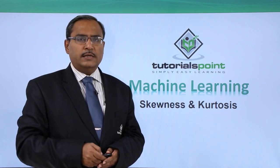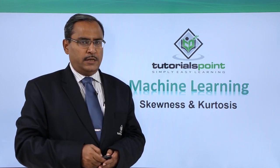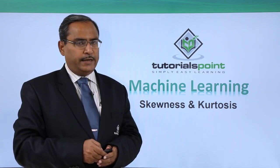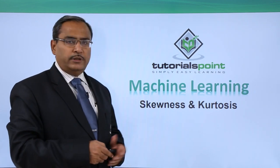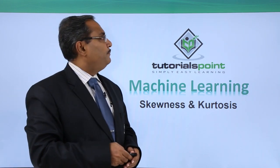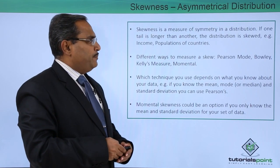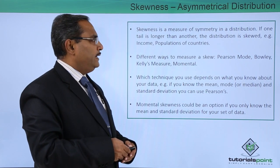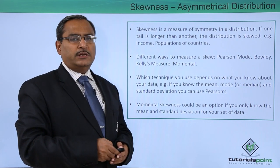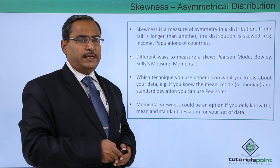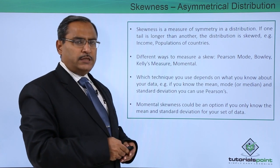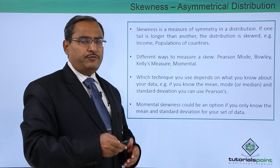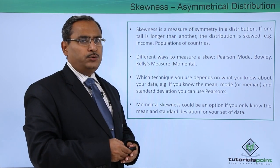In this video, we are going to discuss skewness and kurtosis. Skewness will depict the symmetry in a distribution. Skewness is a measure of symmetry in a distribution — if one tail is longer than the other, then we say that the distribution is skewed. If you consider the income or population of a country, you can get a skewed distribution.